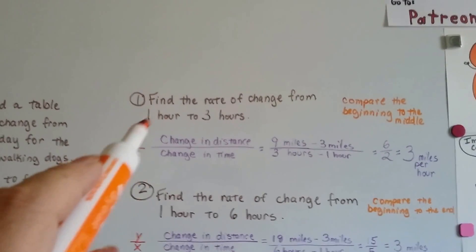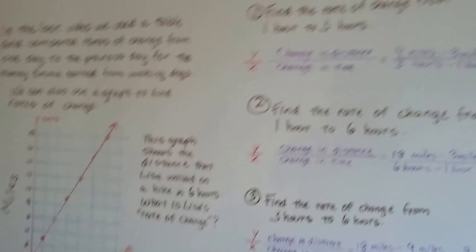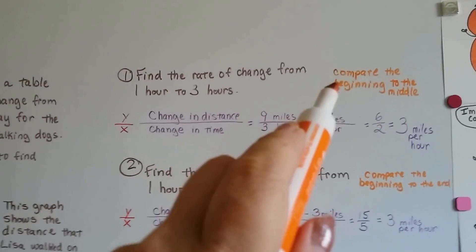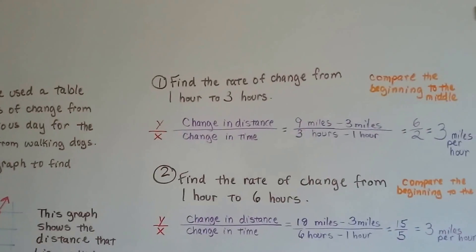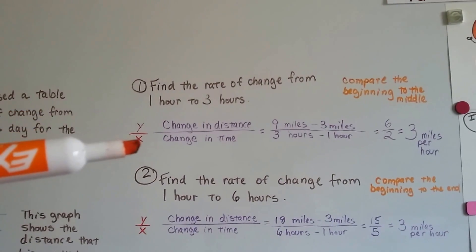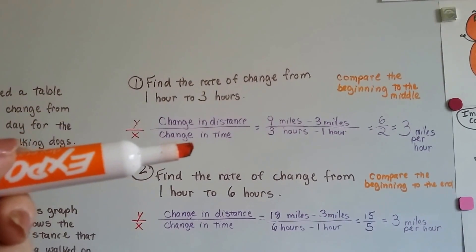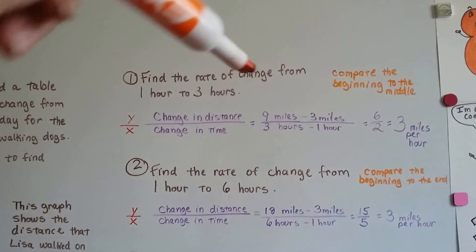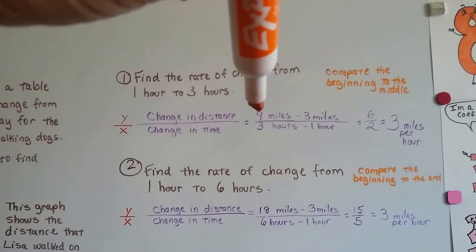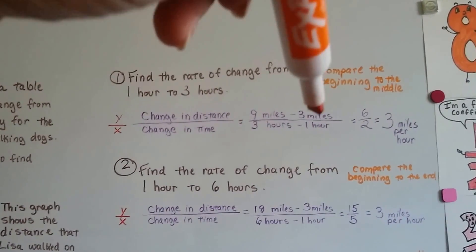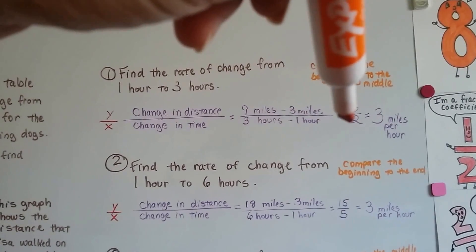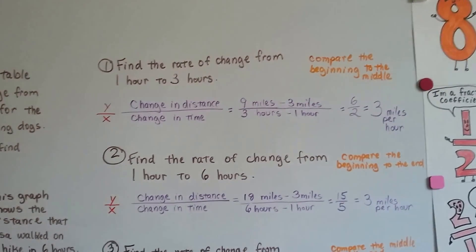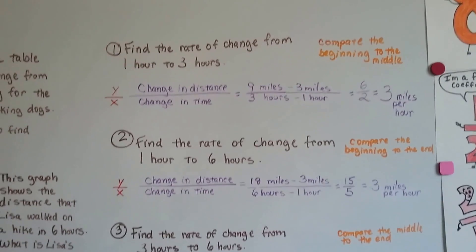The first thing we do is find the rate of change from one hour to three hours. It was a six-hour hike, so we're comparing the beginning to the middle. We're going to find y over x, the change in distance over the change in time, the miles over the hours. At three hours, she walked nine miles, and at one hour, she walked three miles. Nine take away three is six. Three take away one is two. That's six over two. That's three miles per hour.